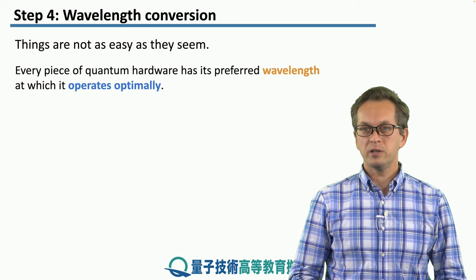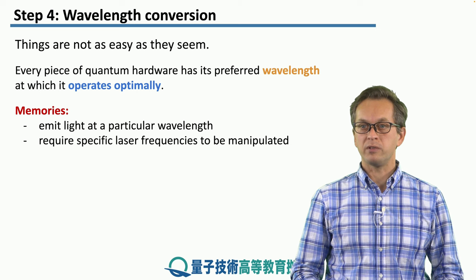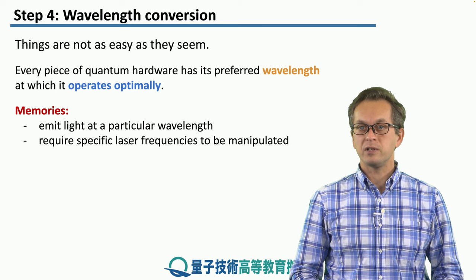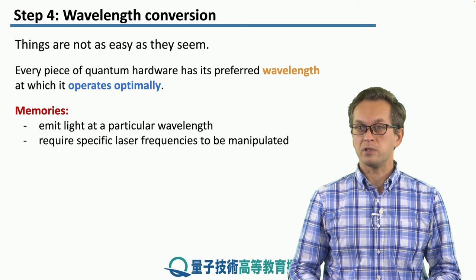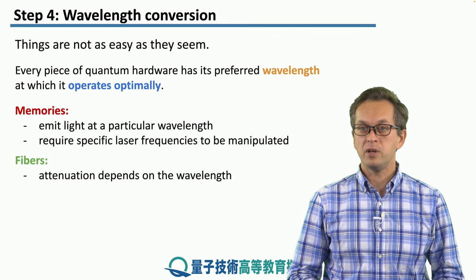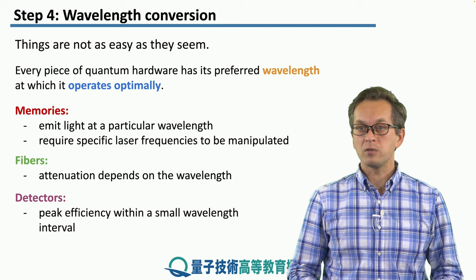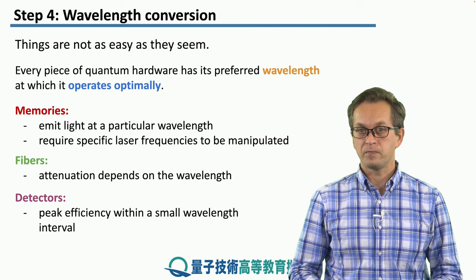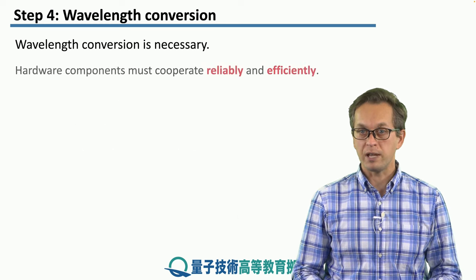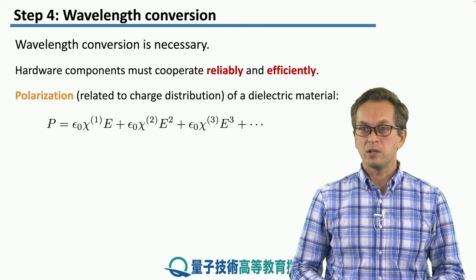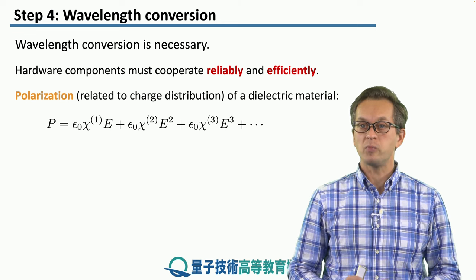Every piece of quantum hardware operates at different wavelengths optimally. For example, memories emit light of a particular wavelength only, and they require specific laser frequencies in order to be manipulated, to be encoded, or to transfer photons into the fibers. The fibers themselves attenuate different wavelengths with different rates. Detectors also have their peak efficiency within a small wavelength interval. This really complicates things because we would like all of the components to work reliably and efficiently. So let's see if we can change the wavelength of the photons that we are using for communication between the different components of the network.